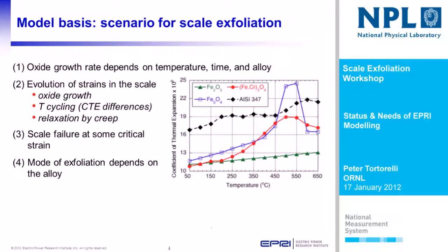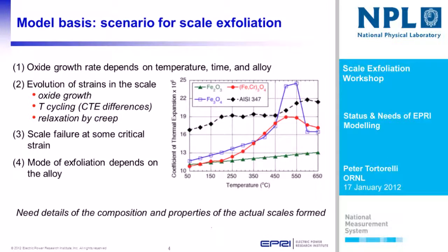The model takes this basis — this scenario for scale exfoliation. This is nothing new to anyone in this room. The oxide growth rate depends on temperature, time, and alloy. The evolution of the strains in the scale are from several sources, including oxide growth as well as CTE differences, although the CTE differences are usually the major contributor to strain development and even relaxation by creep. This includes scale failure at some critical strain, and the mode of exfoliation depends on the alloy. We need details of the compositions and properties of the actual scales formed to make this an accurate model.